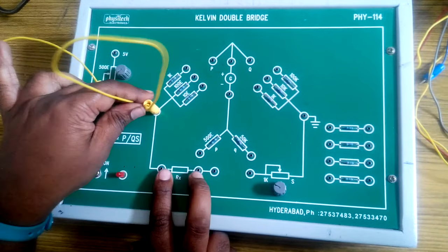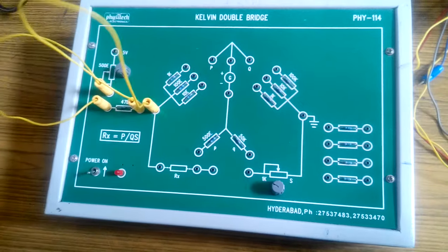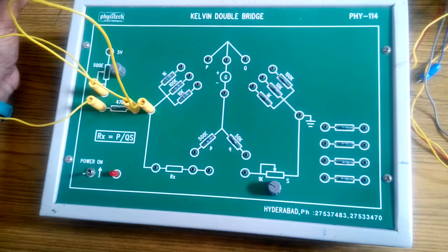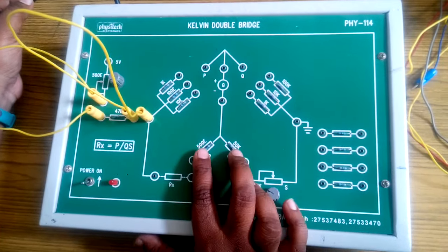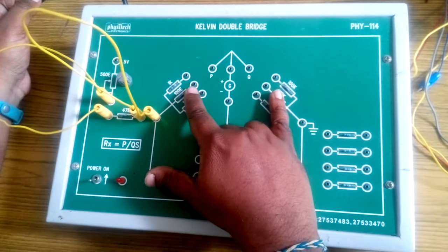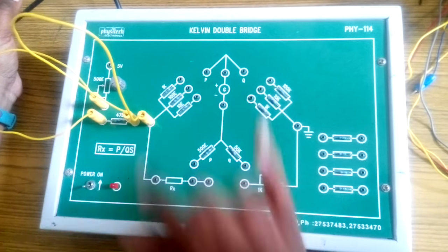In place of Rx we will be connecting an unknown resistance. The ratio is maintained over here, usually maintained across the resistors P and Q also.